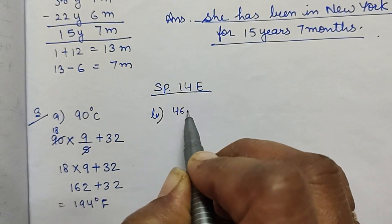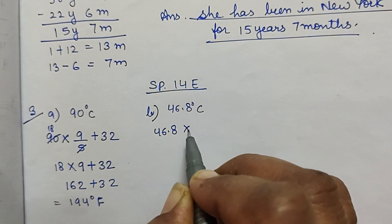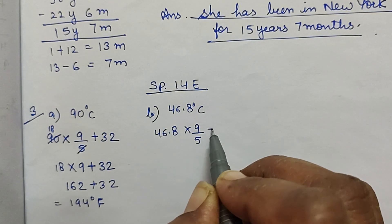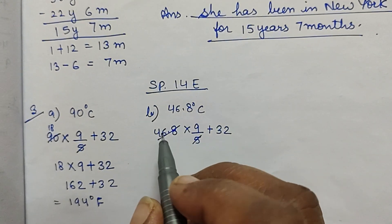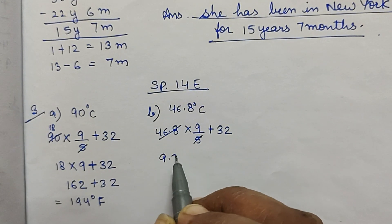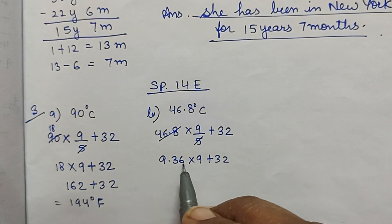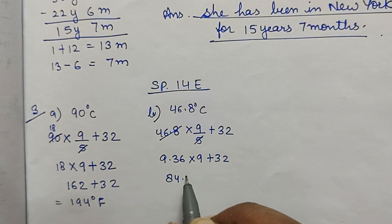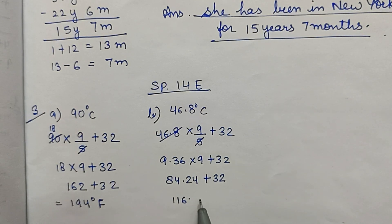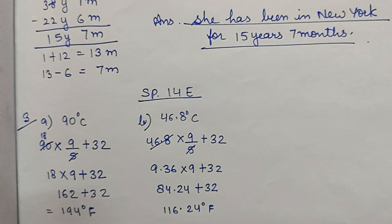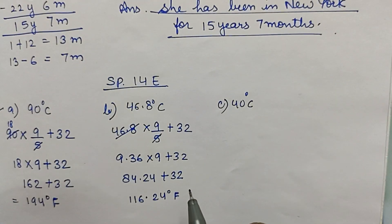Part B: 46.8 degree Celsius. So 46.8 into 9/5 plus 32. 46.8 को 5 से divide करेंगे तो आएगा 9.36. 9.36 into 9 plus 32. 9.36 को 9 से multiply करेंगे तो आएगा 84.24. 84.24 plus 32 is equal to 116.24 degree Fahrenheit.